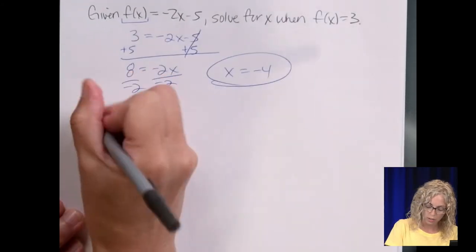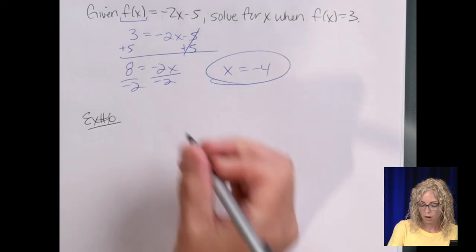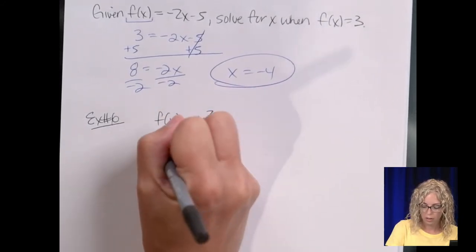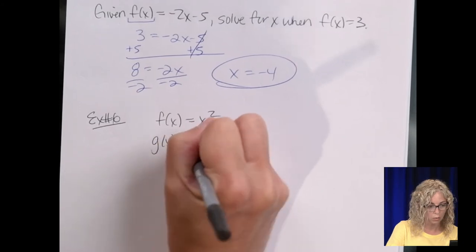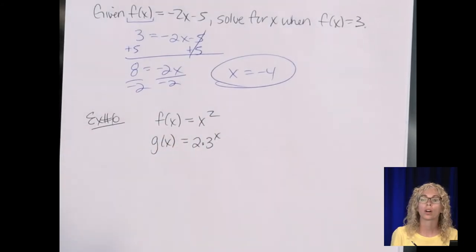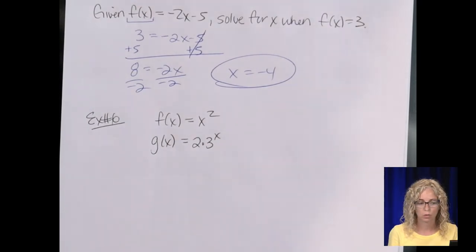All right. We're given two functions. So example number 6. Our functions are f of x equals x squared and g of x equals 2 times 3 to the x. Remember, they can use any letter. p of x, q of x, m of x, so on and so forth.